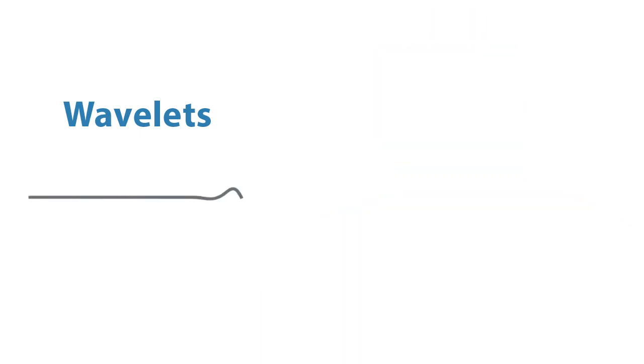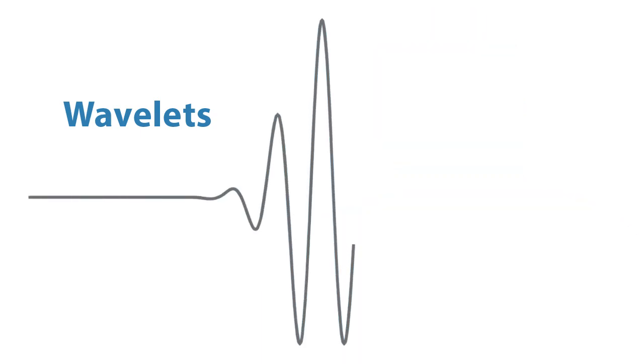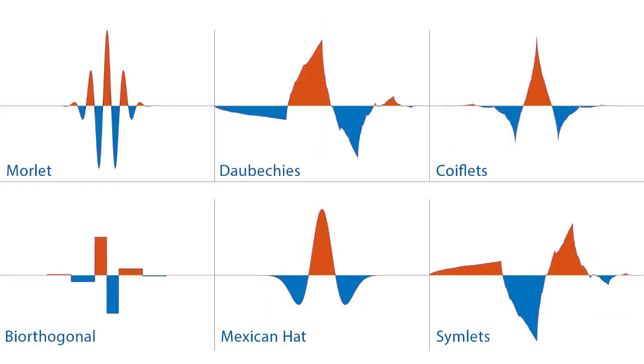A wavelet is a rapidly decaying, wave-like oscillation that has zero mean. Unlike sinusoids, which extend to infinity, a wavelet exists for a finite duration. Wavelets come in different sizes and shapes. Here are some of the well-known ones.